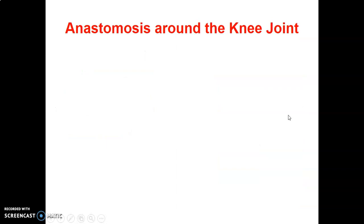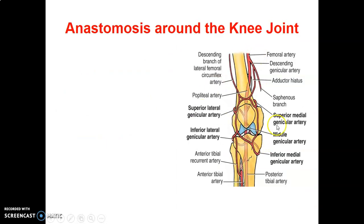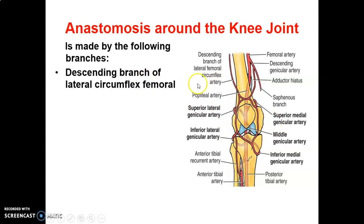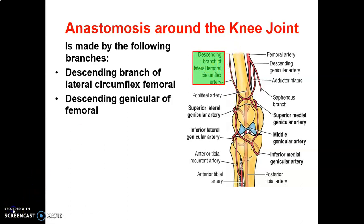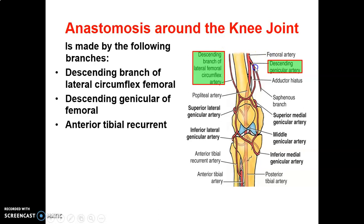The genicular anastomosis around the knee is formed by several branches. First, the descending branch of the lateral circumflex femoral artery. Second, the descending genicular branch of the femoral artery. Third, recurrent branches from the anterior tibial artery, which ascend upwards to participate in the genicular anastomosis.